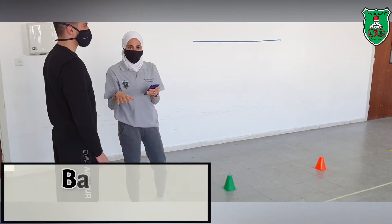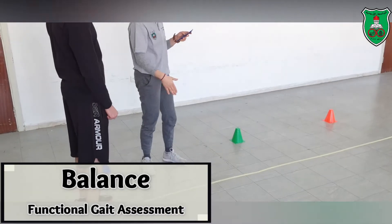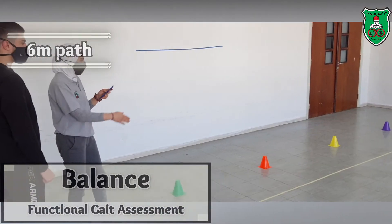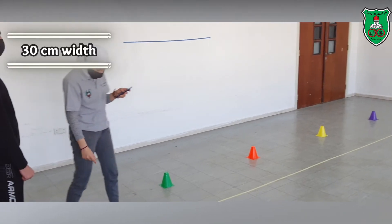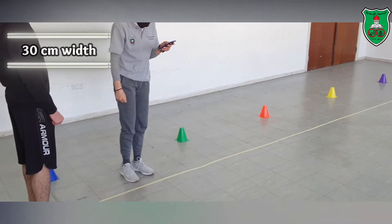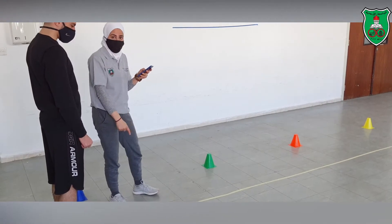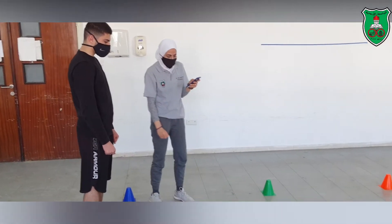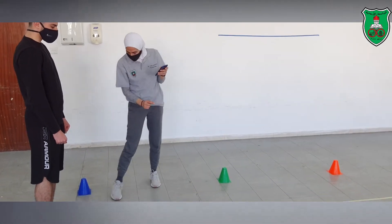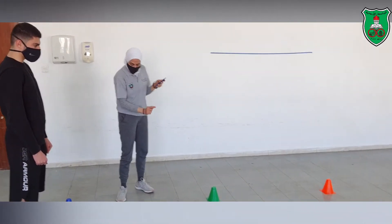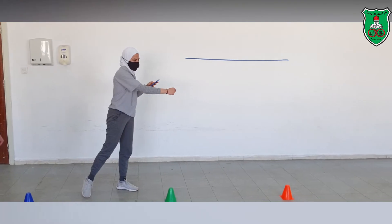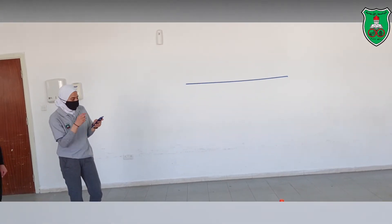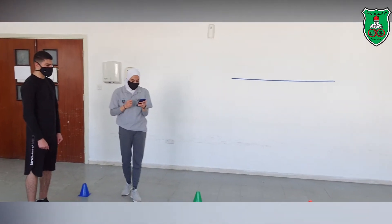For the functional gait assessment, you need a walkway or a path that is 20 feet long or 6 meters, and the width of the path should be one tile. The tile is 30 centimeters or 12 inches in width. We also need to mark only one and a half meters, and we will need an obstacle in one of the tasks.